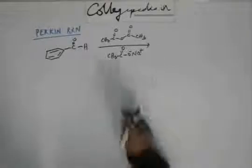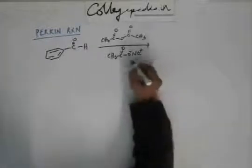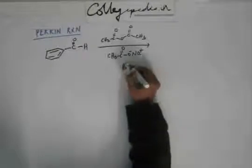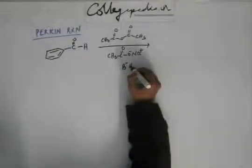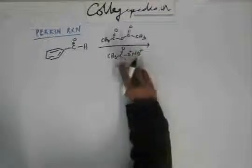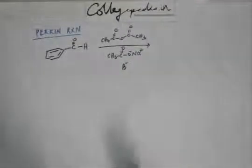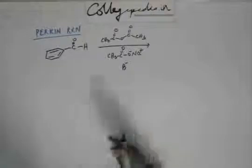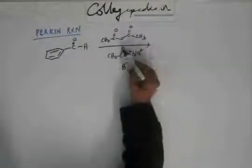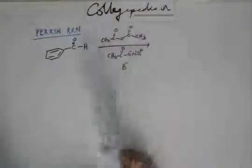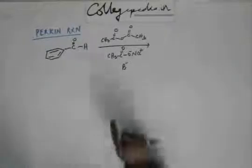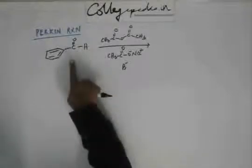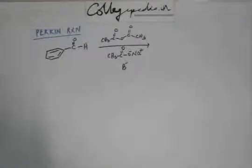So along with this salt if we take a base, suppose I take BHB minus and B minus is the base. This base can be hydroxide, this base can be any other weak base, this base can be alkoxide. Now if we take this base then this acetate ion is stable because it has equivalent resonating structures. So this base is the one that is going to initiate the reaction. Base abstracts proton and there is no acidic hydrogen here in benzaldehyde.